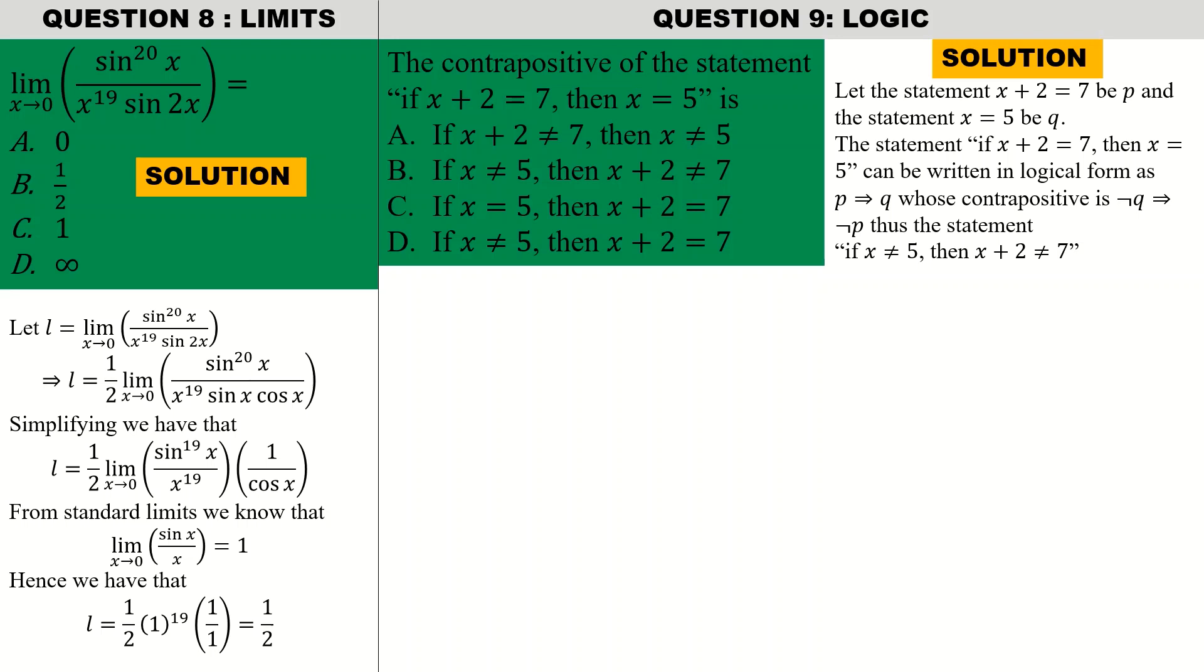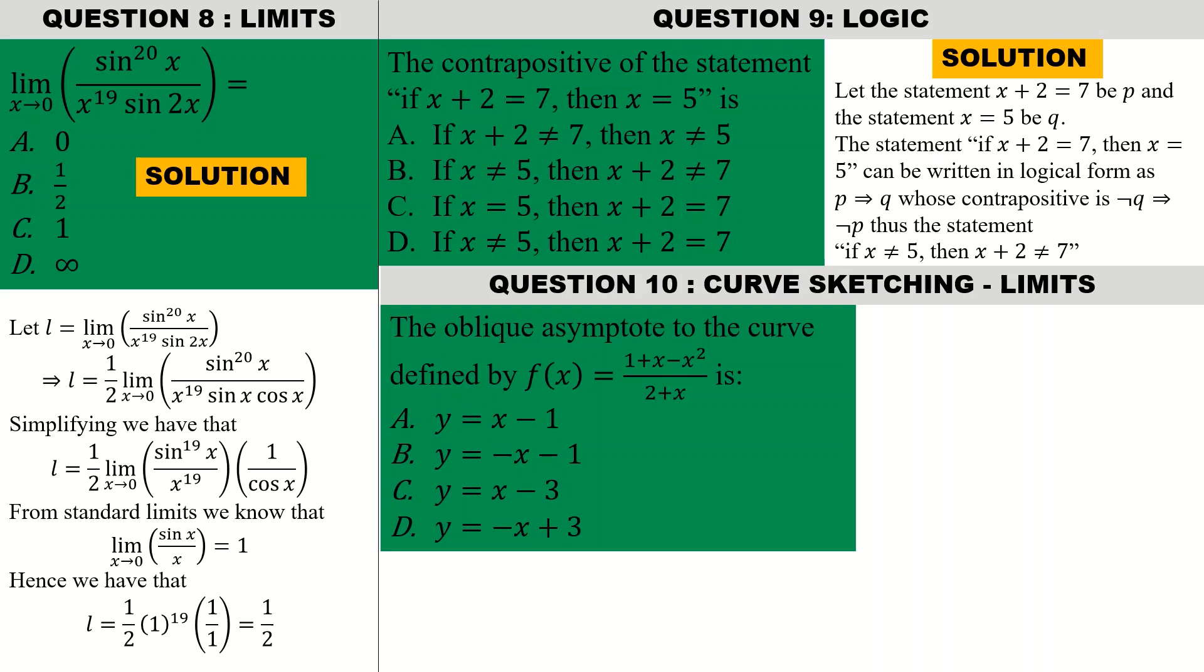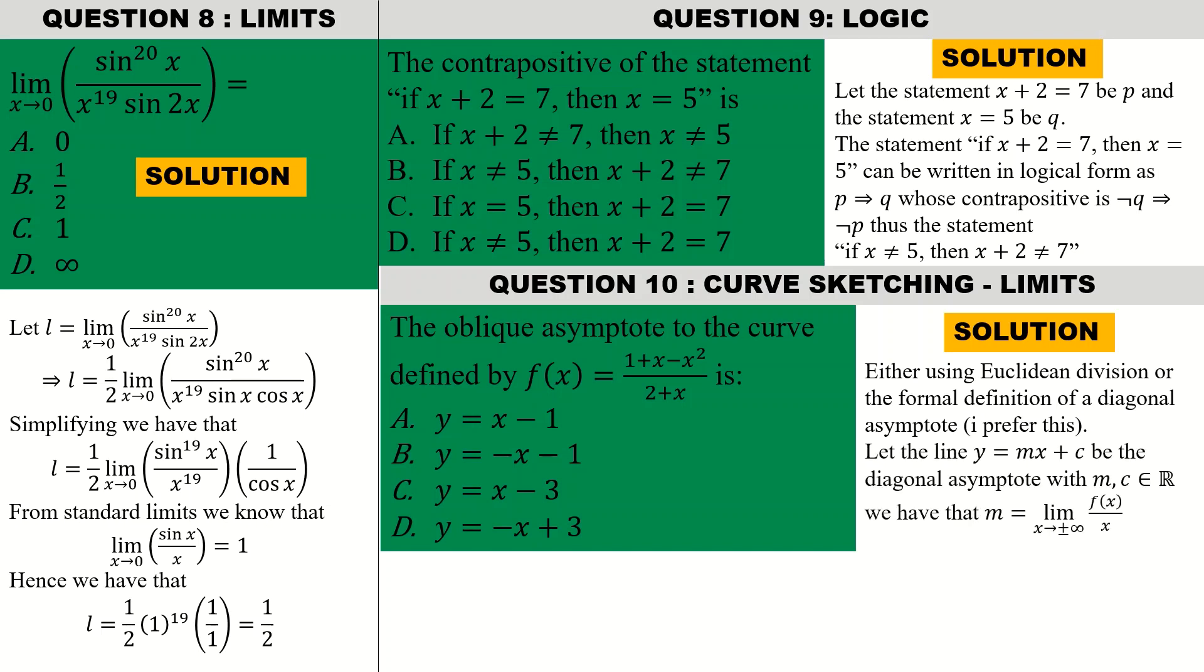Question 10, the last question on curve sketching and limits. The question reads: the oblique asymptote to the curve defined by this is. I'll give some recalls of oblique asymptotes. To find the oblique asymptote of a rational function, we either use long division or we use the formal definition of the diagonal asymptote. I generally prefer to use its definition. If your line y equal to mx plus c is the diagonal asymptote, then you can find the gradient and the intercept. The gradient is simply m, which is the limit as x tends to plus or minus infinity of f(x) on x. We can obtain that limit as negative 1, and c is simply the limit as x tends to plus or minus infinity of the function minus mx. By so doing we get our intercept to be 3. Hence the line y equal to negative x plus 3 is the diagonal asymptote, so the correct response is D.